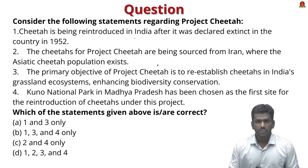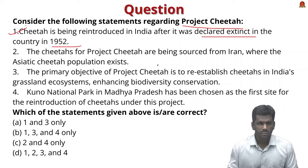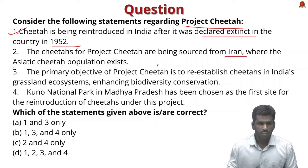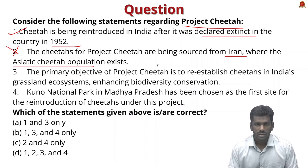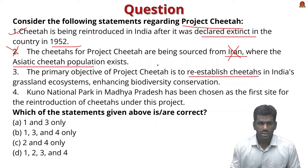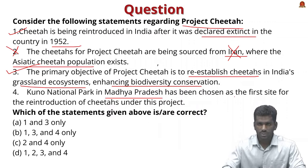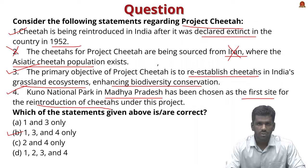MCQ on Project Cheetah: Statement 1 — cheetah is being reintroduced in India after it was declared extinct in 1952 — correct. Statement 2 — cheetahs for Project Cheetah are sourced from Iran where the Asiatic cheetah population exists — incorrect, they were sourced from Namibia and South Africa. Statement 3 — the primary objective is to re-establish cheetahs in India's grassland ecosystem — correct. Statement 4 — Kuno Palpur National Park in Madhya Pradesh is the first reintroduction site — correct. The correct answer is statements 1, 3, and 4 only.